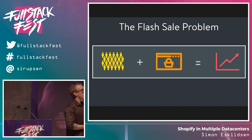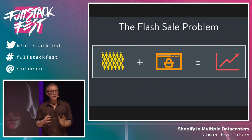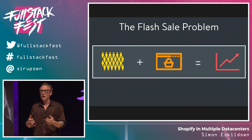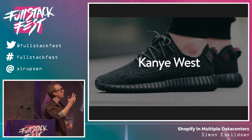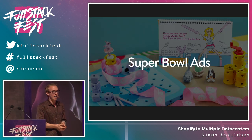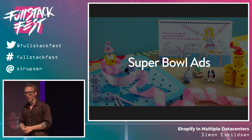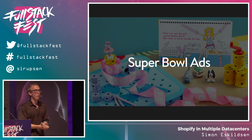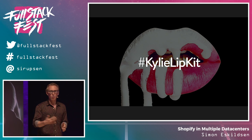We have one particular problem that dictates everything we do on the infrastructure team at Shopify, which we call the flash sale problem. We have merchants who can drive a completely disproportionate amount of traffic to us. From one second to the next there might be a 2x or 3x difference in traffic because of a shoe launch or Super Bowl ads driving massive traffic. If you've ever tried to visit websites during the Super Bowl, they often have problems. We have merchants that run Super Bowl ads every year — I think three last time.